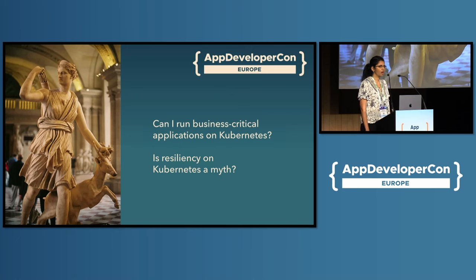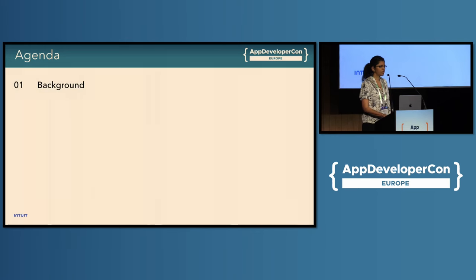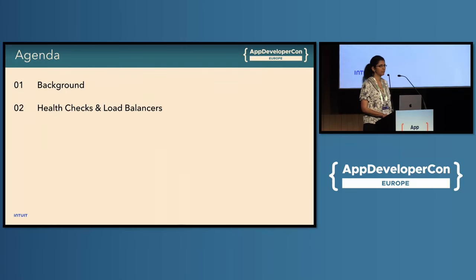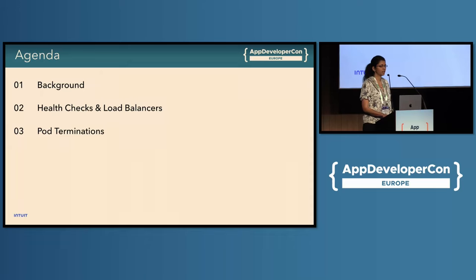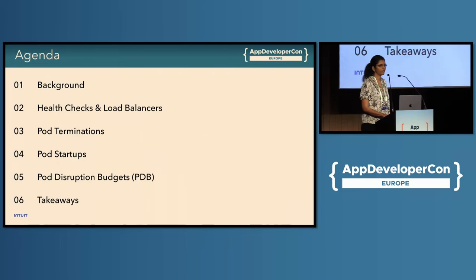It is quite possible to eliminate most infrastructure-related issues and be able to run highly resilient and available services on Kubernetes. This is just a 25-minute talk, so we've chosen the top few concerns that we've seen over the years from our service developers, and we're going to share some best practices. We'll start with the background of Intuit, then jump into health checks with respect to load balancers, port terminations and startups, port disruption budgets, and finish off with some takeaways.